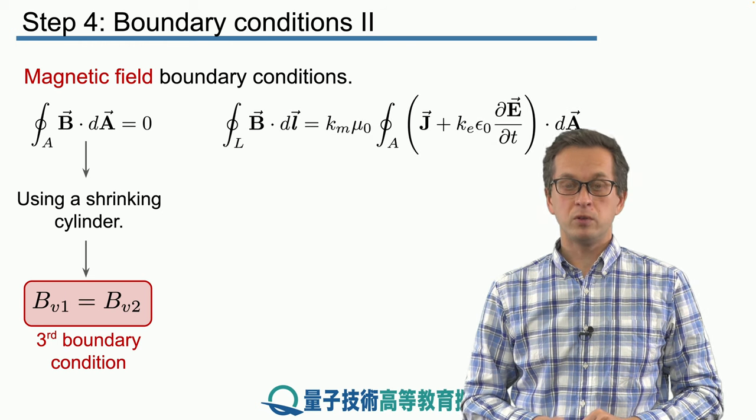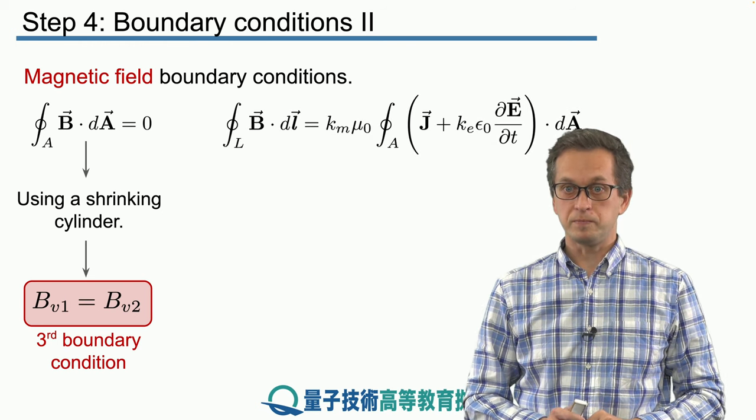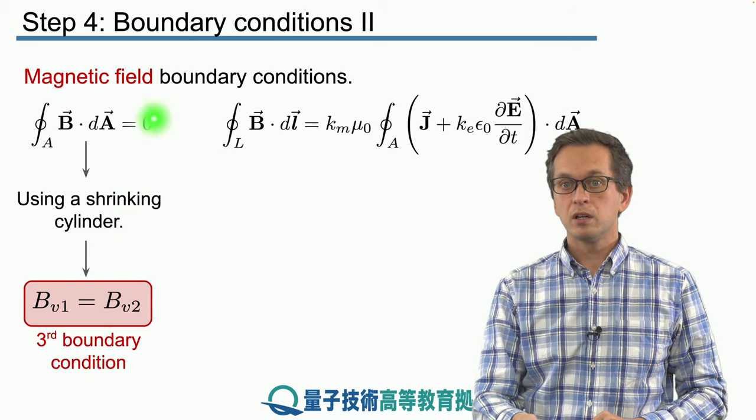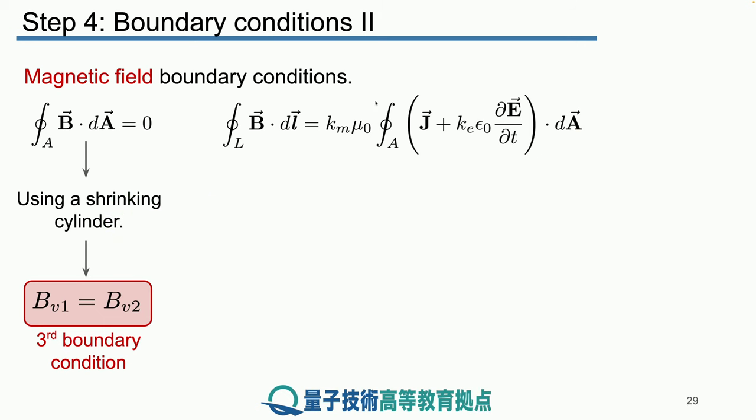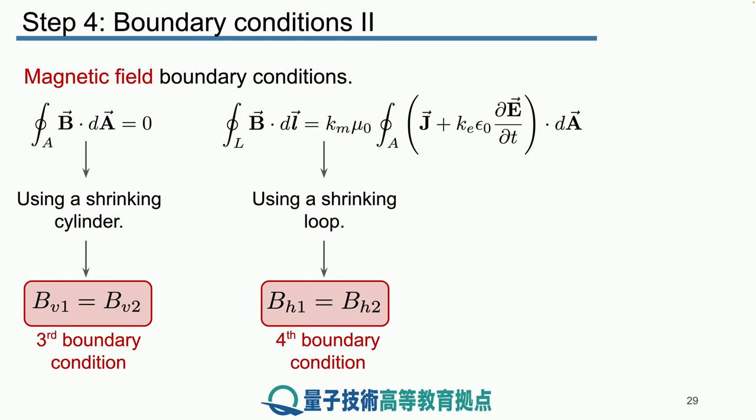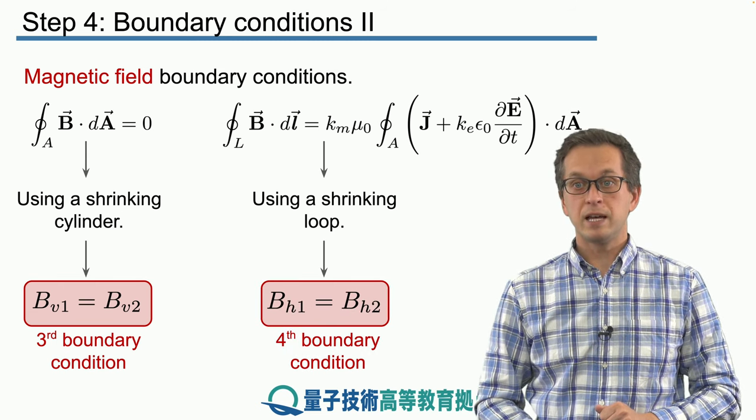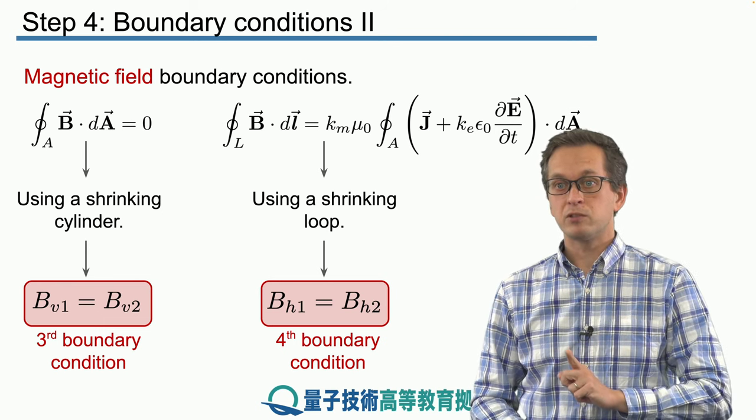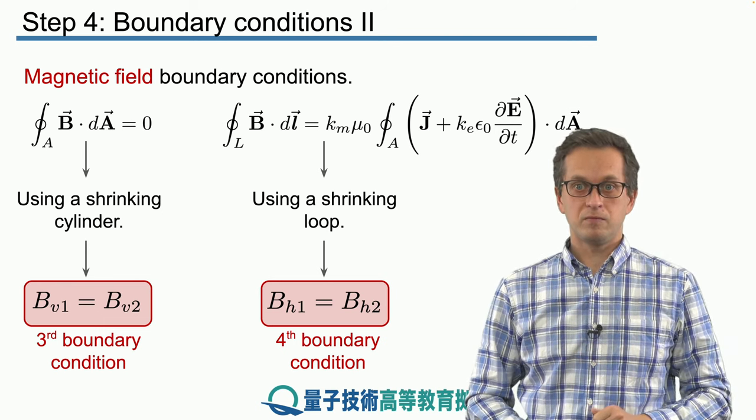Finally, all we have to do is consider Maxwell's fourth equation. And again, because we are talking about a line integral, a closed line integral, what we do, we use the same trick. We draw a rectangular loop where the top half is sitting in dielectric 1, bottom half is sitting in dielectric 2, and we shrink its height. And what we get is the following, that the horizontal components of the magnetic field of the electromagnetic wave as it travels from dielectric 1 to dielectric 2 does not change.